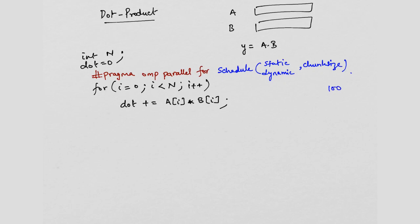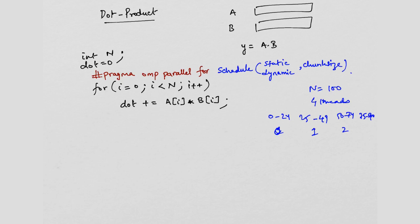For instance, if the array size is 100 and there are 4 threads, static scheduling gives iterations 0–24 to thread 0, 25–49 to thread 1, 50–74 to thread 2, and 75–99 to thread 3. If you want smaller chunks, say units of 10, you specify schedule(static, 10). Then iterations 0–9 go to thread 0, 10–19 to thread 1, 20–29 to thread 2, 30–39 to thread 3, then 40–49 back to thread 0, and so on round-robin.